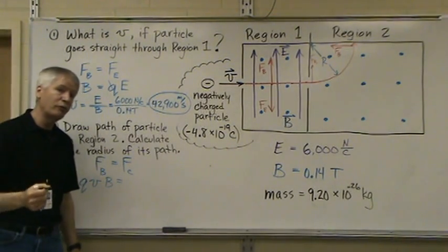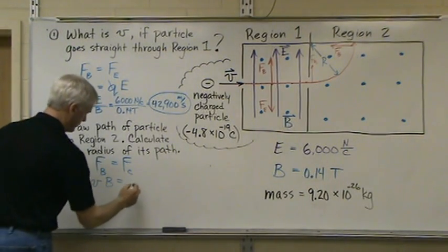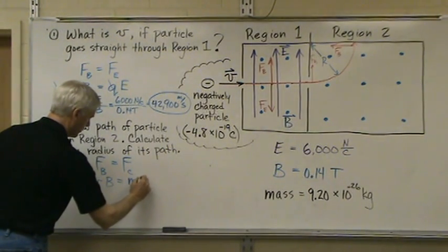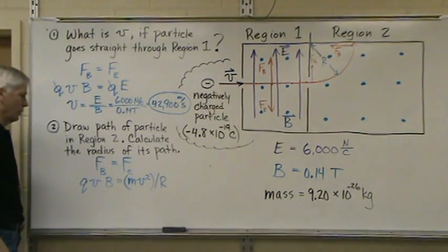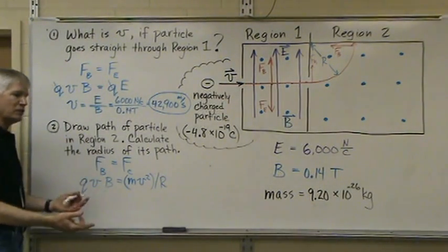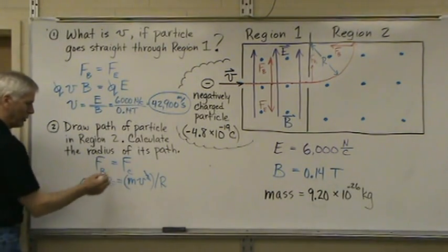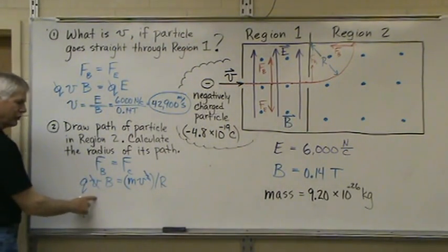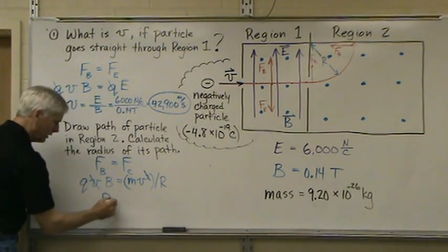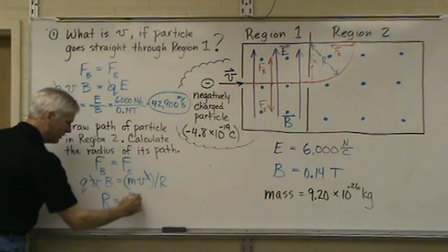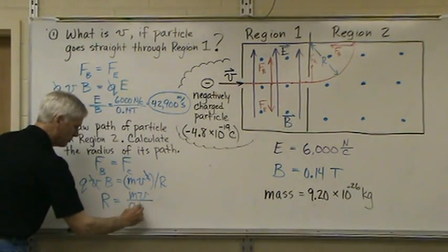The equation for centripetal force is MV squared over R. We can rearrange this to solve for R. One of the velocities will drop out over here. This one will drop out. We can bring R over to this side, bring QV over there. There, you'll have R equals MV divided by Q times B.